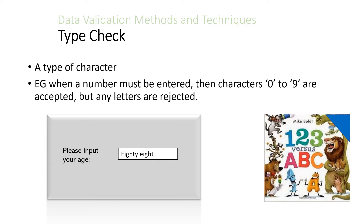There's also a type check — we need to check whether people are inputting the right type of character. So if you're asking for input of a number and somebody types in letters, it would be wrong. For example, if somebody tells you there are '88' in letters, that would not be accepted.